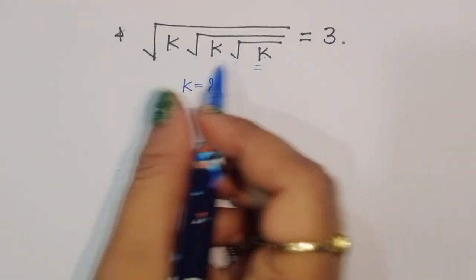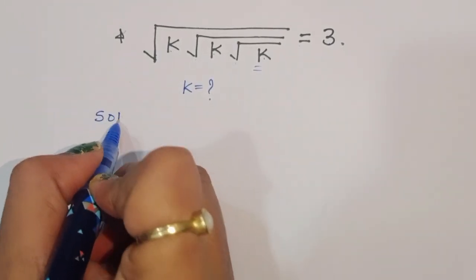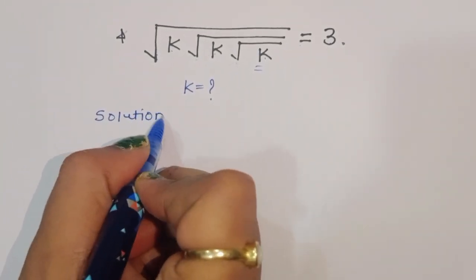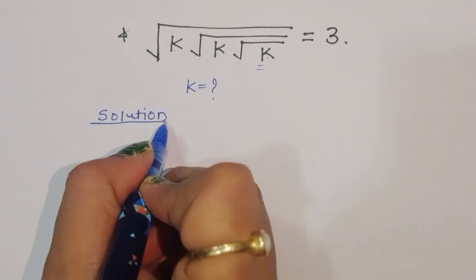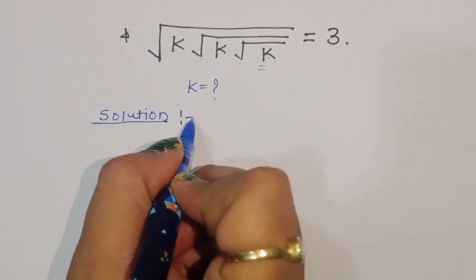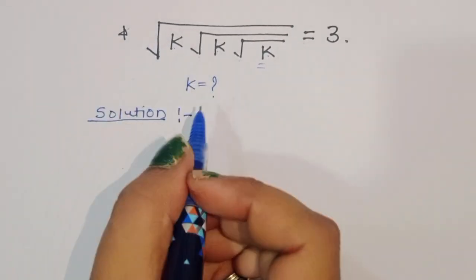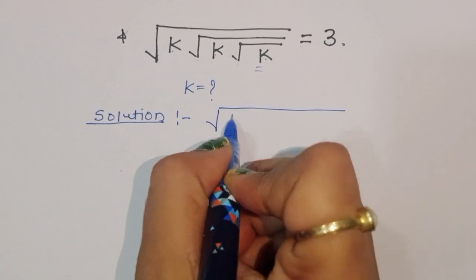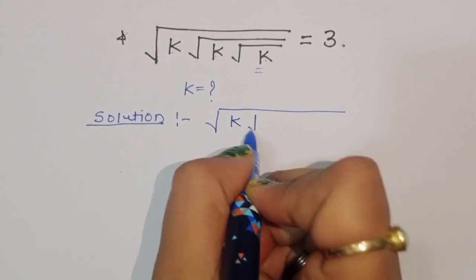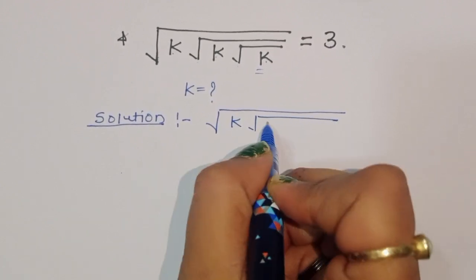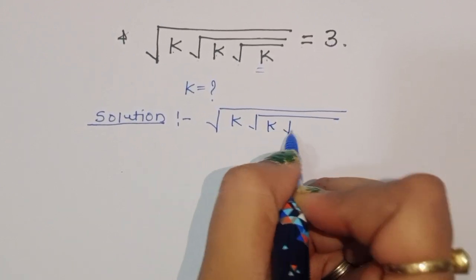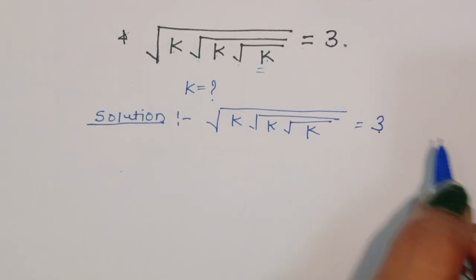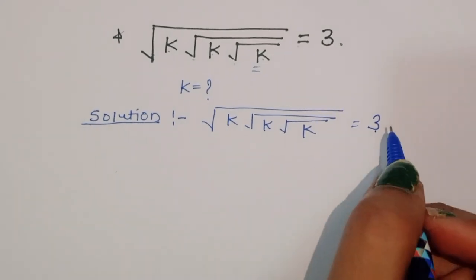Let's see the solution. How we can solve this type of question? We have: square root of k, square root of k, square root of k is equal to 3. This is given.